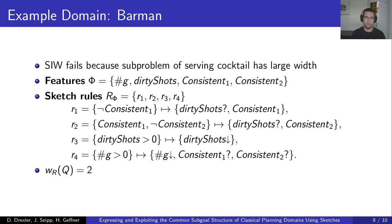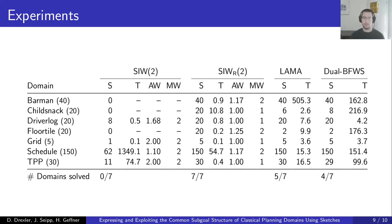We also ran experiments with our sketches. We compare against domain-independent planners, which is not quite fair since our planner is domain-dependent, but it still shows nice properties of sketches. SIW_R solves all 7 of 7 domains, the standard SIW algorithm solves 0 of 7 domains, LAMA solves 5 of 7 domains, and dual BFWS solves 4 of 7 domains. Looking at the time column, SIW_R solves these domains quite effectively, showing that sketches can go a long way in solving large classes of problems.